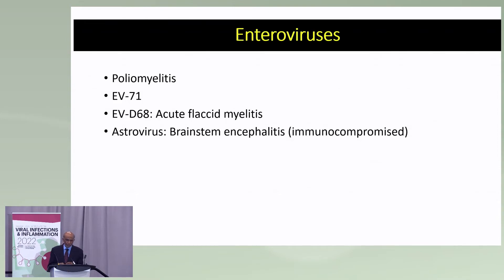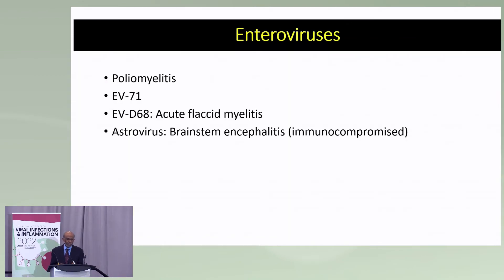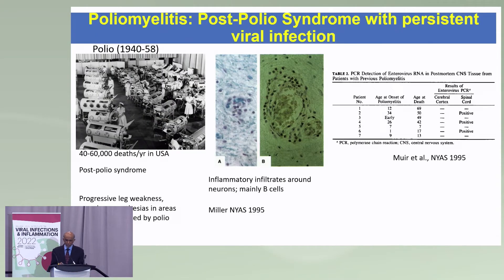Regarding enteroviruses, enterovirus D68 is circulating right now with a resurgence in the United States. There's a lot of respiratory infection ongoing, and our fear is we're going to see new cases of acute flaccid myelitis this season. A whole host of enteroviruses can affect the brain and spinal cord. The most famous is poliomyelitis. There is also post-polio syndrome occurring many years later — published pathology shows virus still present in the spinal cord decades later, with inflammation around that area.